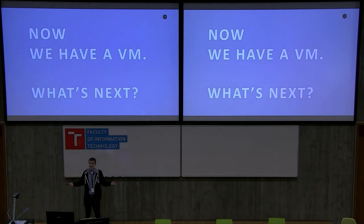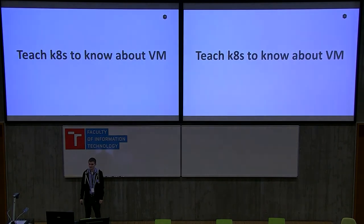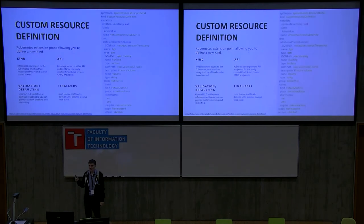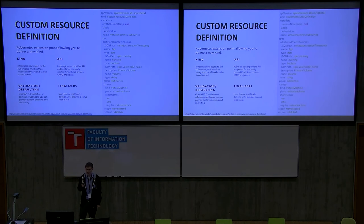At this point we have a virtual machine just sitting in a cluster. The positive thing: you can describe it with a pod specification. The negative thing: you have to write a pod specification, and you usually don't want to do that. So we have a VM — what's next? Probably teach Kubernetes to know about virtual machines.